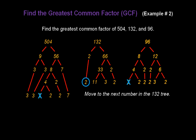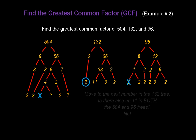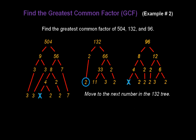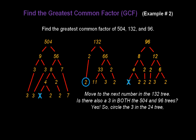Now move to the next number in the 132 tree. That's an 11. Is there also an 11 in both the 504 and 96 trees? The answer is no. So we can move to the next number in the 132 tree, which is a 3. Is there also a 3 in both the 504 and 96 trees? The answer is yes. So circle the 3 in the 132 tree and don't forget to cross out one 3 in each of the other trees.